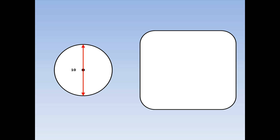We're going to find the circumference of this circle with diameter 10. First of all, write out the formula: circumference equals 2 pi r. This means 2 times pi times the radius. Pi is 3.14, and the radius is half the diameter — 10 divided by 2 is 5. The circumference ends up being 31.4 centimetres.